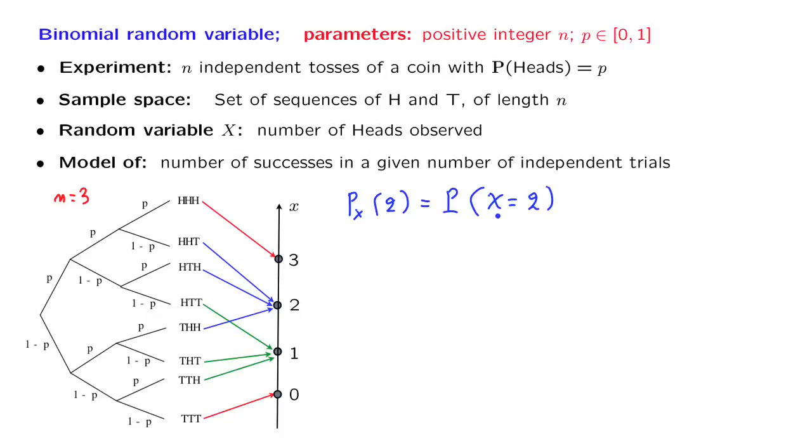Now, the random variable taking the numerical value of 2, this is an event that can happen in three possible ways that we can identify in the sample space. We can have two heads followed by a tail. We can have heads, tail, heads, or we can have tails, heads, heads.